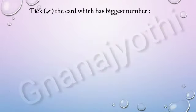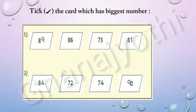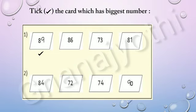Now, take the card which has the biggest number. Look at the first question — here there are 89, 86, 73 and 81. The biggest number among these is 89. Look at the second question — 84, 72, 74 and 90. The biggest number among these is 90.